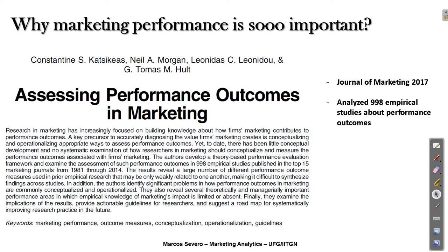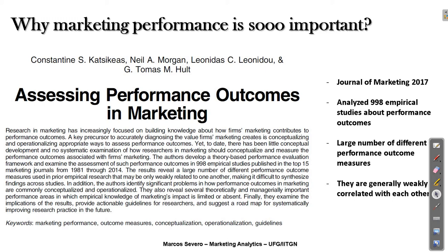The two most important conclusions of this article are that they found a large number of different performance outcome measures in marketing — I will talk about this in the next slide — and that these measures are generally weakly correlated with each other, which I will explore in the next lecture.